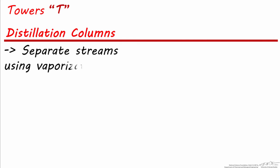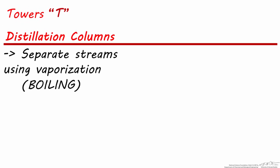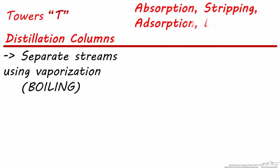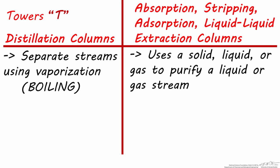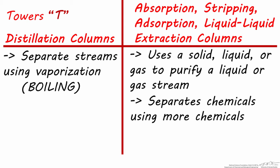Before we discuss these separators in greater detail, something to note is that distillation columns separate one stream into two or more using heating, and more specifically, it separates chemicals using boiling. The rest of these separators use either a solid, liquid, or gas to purify a liquid or gas stream. So distillation uses heating to separate chemicals, and absorption, stripping, adsorption, and liquid-liquid extraction all involve using chemicals to separate chemical streams.